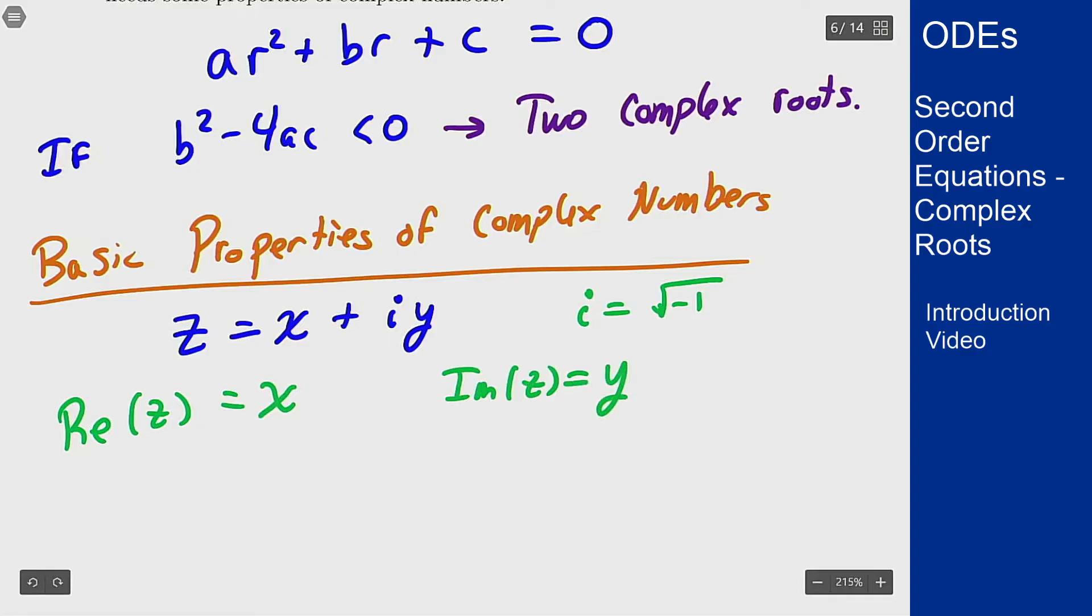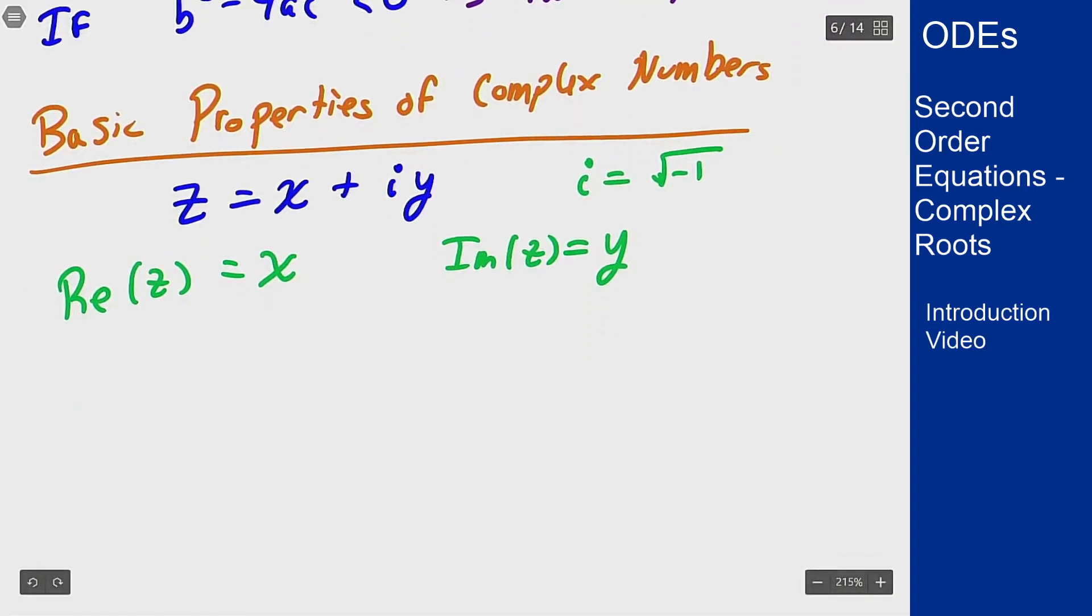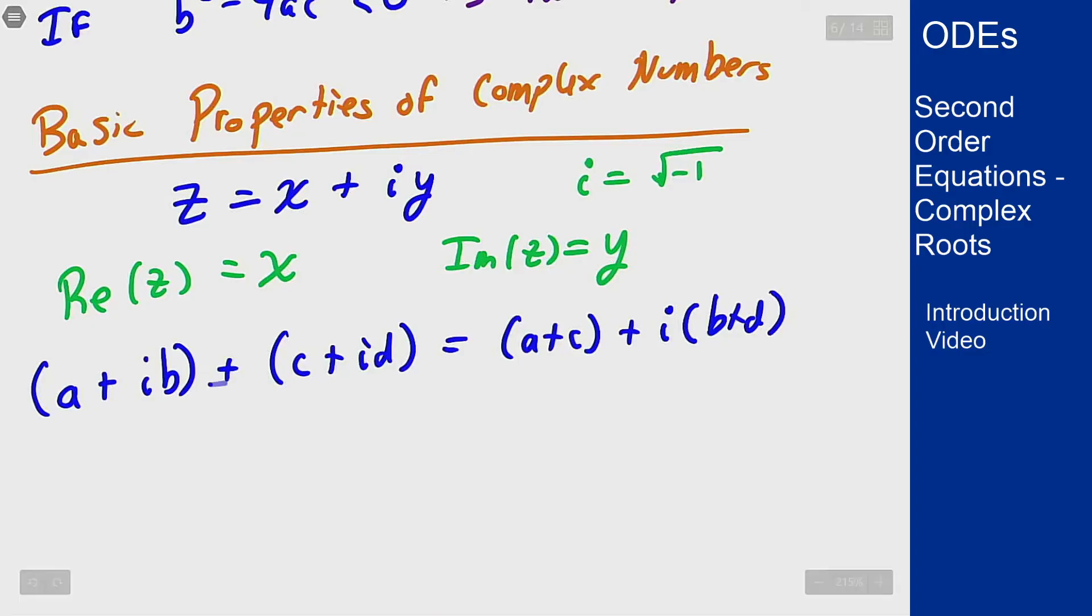We can do basic operations on complex numbers. If I want to add two numbers, say (a + ib) adding to (c + id), I would just add component by component: add the two real parts to get (a + c) as the real part of the next complex number, plus i times (b + d) to get the imaginary part. I can also subtract, and that results in just subtracting each component in the same way as well.